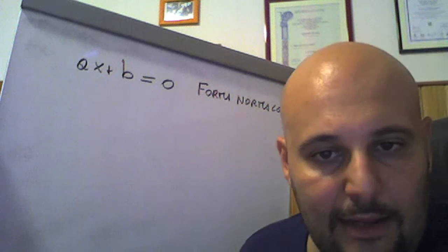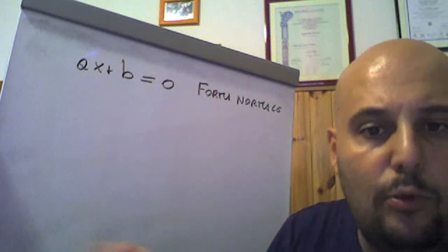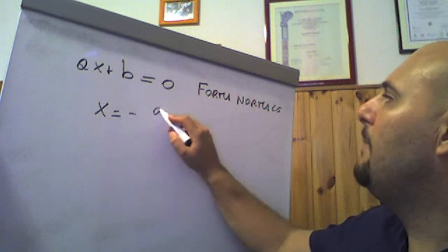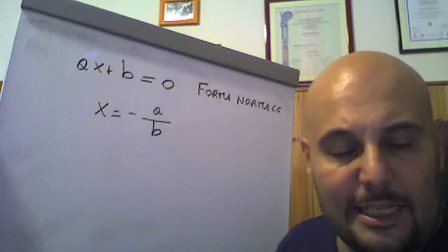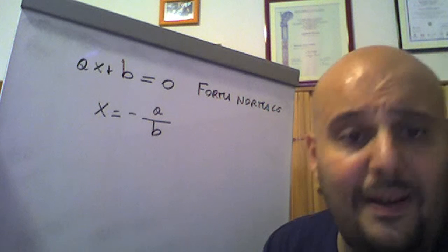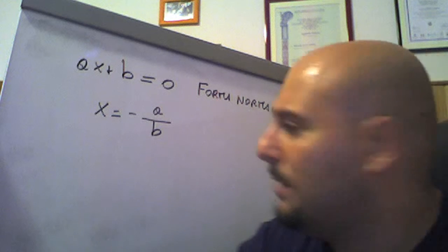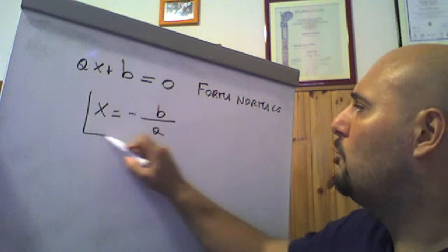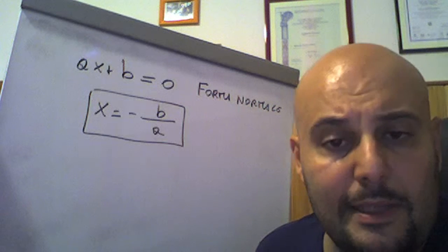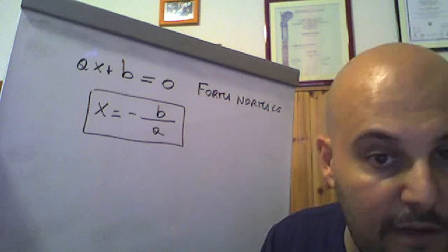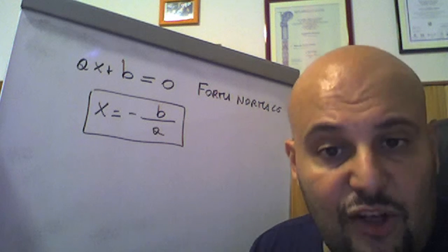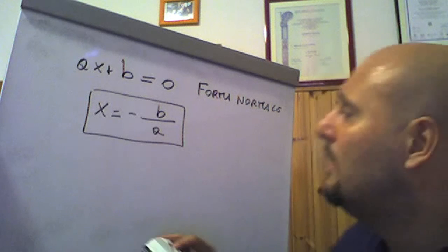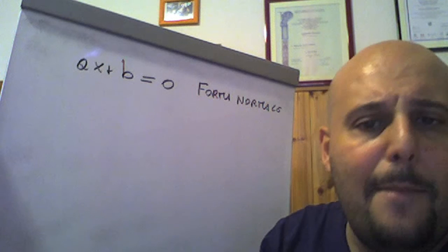We recall that if a = 0, we get b = 0, where b is a number, and the equation is impossible. Whereas if a ≠ 0, the equation admits solutions and is determined, of the type x = -b/a, where by the transport rule we bring b from left to right changing sign, then by the second equivalence principle we divide both members by a, obtaining x = -b/a. So if a ≠ 0, the equation is determined and admits the unique solution x = -b/a. If instead a = 0 and b ≠ 0, the equation is impossible, meaning it admits no solutions. Note that if both a and b are 0, the equation is indeterminate, meaning it admits infinite solutions.